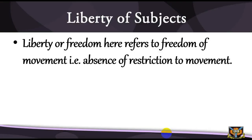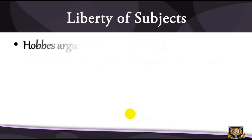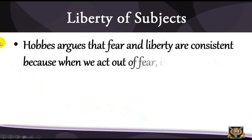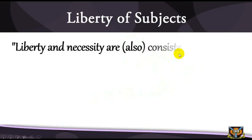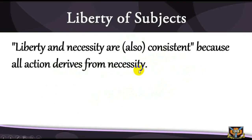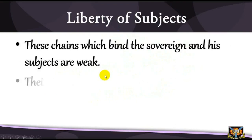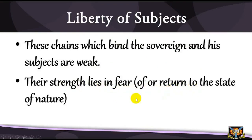Thus, what we have in Hobbes is far from liberty in either the liberal or socialist sense, but rather an attempt to rationalize the absence of liberty in the Hobbesian state. First, Hobbes argues that fear and liberty are consistent, because when we act out of fear it is our choice — we still have the option not to act at all. Liberty and necessity are also consistent because all actions derive from necessity. As the commonwealth is an artificial man, so are civil laws artificial chains. These chains which bind the sovereign and its subjects are weak — their strength lies in fear of, or return to, the state of nature.